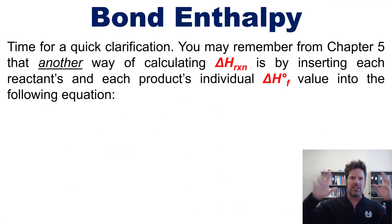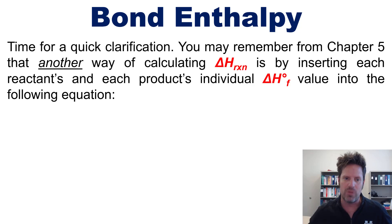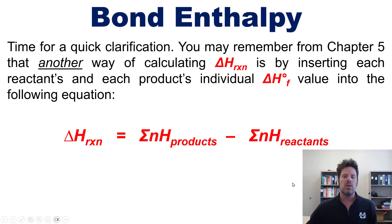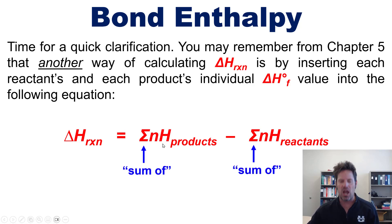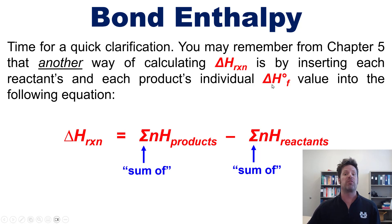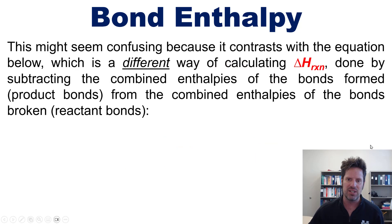Now I have to interrupt here to make a quick clarification. You might remember from back in chapter 5 that another way of calculating a reaction enthalpy is by inserting each reactant's and product's individual enthalpy of formation value into the equation shown here, where the sigma symbols represent the sum of. So you take the sum of the enthalpies of formation of the products minus the total sum of the enthalpies of formation of the reactants. If you use this equation — which is an enthalpy of formation approach, not a bond enthalpy approach — it's products minus reactants.